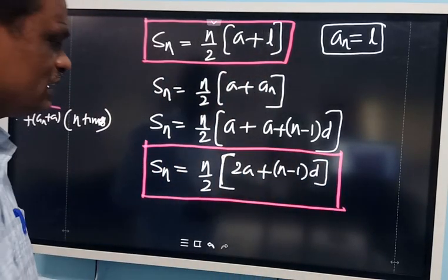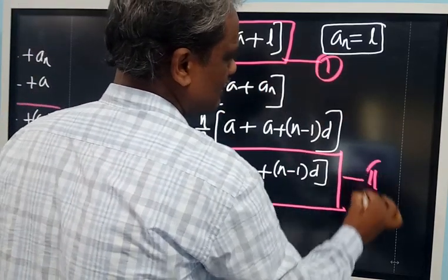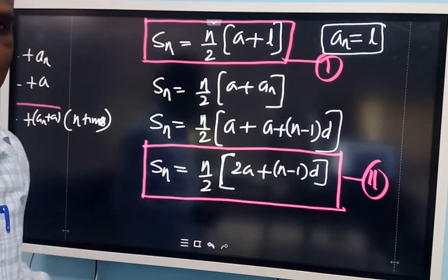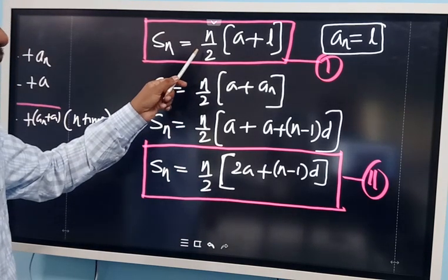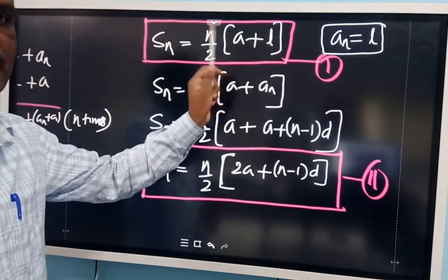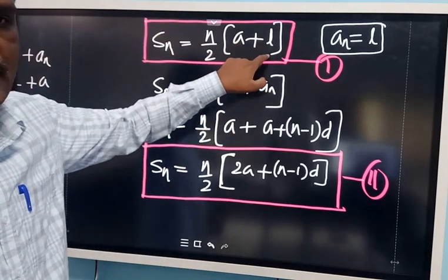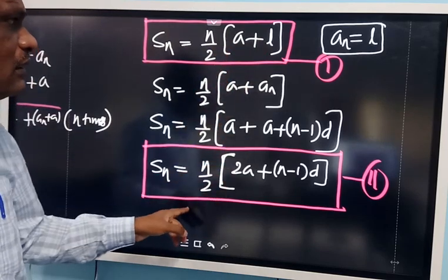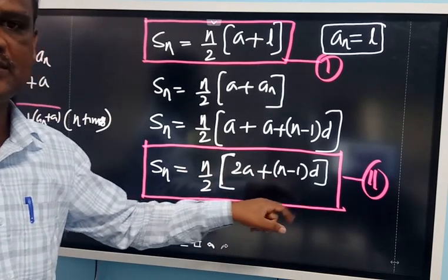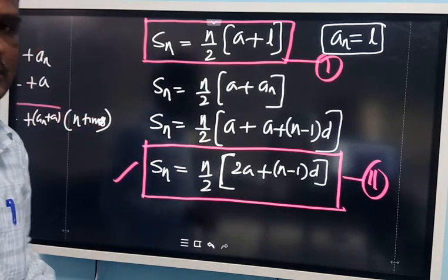So this is the formula to find out the sum of first N terms of an AP. What is the difference between the two formulas? When the last term and first term are given, use SN = N/2 × (A + AN) — common difference is not required. When the last term is not given but first term and common difference are given, use SN = N/2 × (2A + (N-1)D).